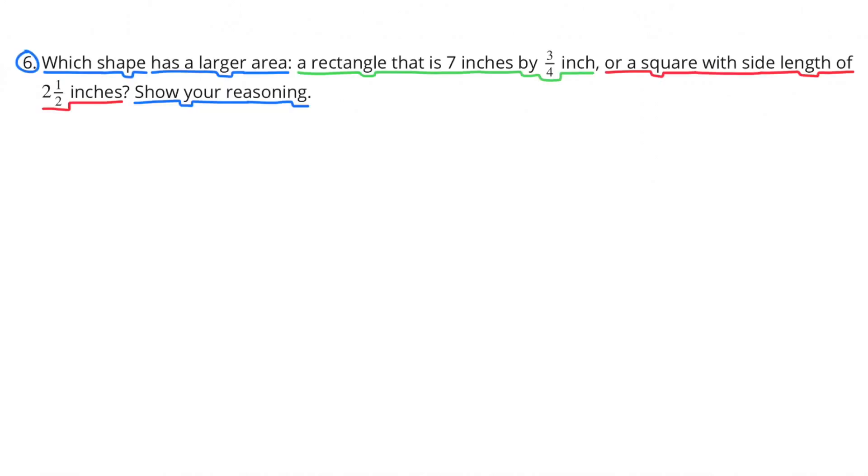Number 6. Which shape has a larger area? A rectangle that is 7 inches by 3/4 of an inch, or a square with side length of 2 1/2 inches? Show your reasoning.